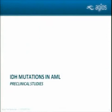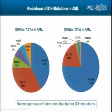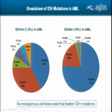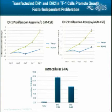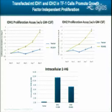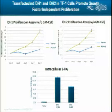I'll switch gears and talk about the preclinical work we've done in AML. The vast majority of IDH2 mutant cases have the R140Q mutation, followed by R172K; in IDH1 AML, you see R132H or R132C. The problem was that there are no endogenous cell lines harboring IDH mutations, so we had to engineer a system. We used TF1, an erythroleukemia cell line dependent on GM-CSF for growth. When we overexpressed IDH1 or IDH2 in these cells, we were able to confer growth factor independence, showing gain of function correlating with millimolar 2-HG concentrations similar to patients.